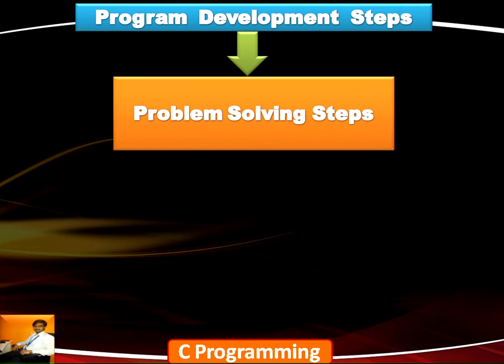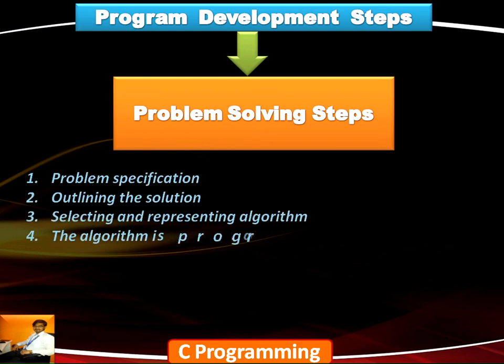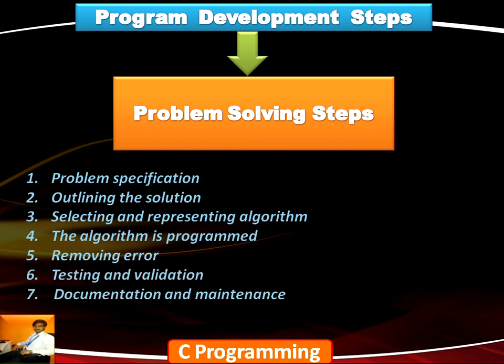In problem solving steps we are going to have seven phases: problem specifications, outlining the solutions, selecting and representing the algorithm. The algorithm needs to be programmed and we need to remove the errors, test and validate the program, and finally documentation and maintenance of the entire process. Let us look into each of them in a precise manner.